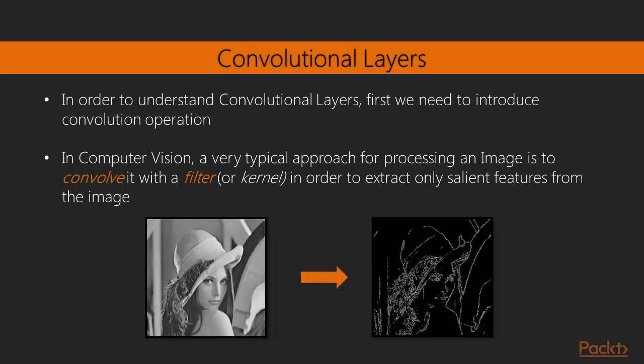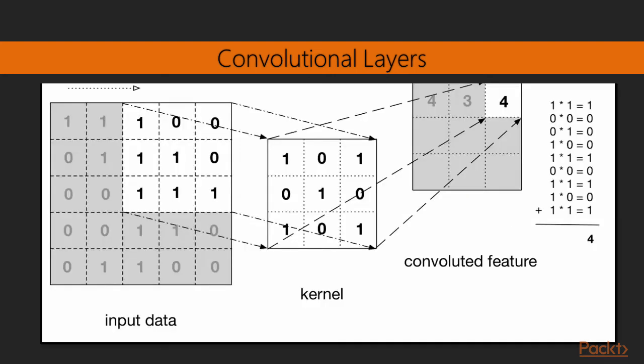So in order to understand the convolutional layers, first we need to introduce the convolution operation. In computer vision a very typical approach for processing an image is to convolve it with a filter or kernel in order to extract only salient features from the image. Like in this case for example, if we are interested in extracting only the edges of this image we can convolve it with a simple filter ending up with this image here on the right.